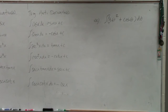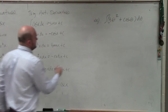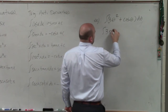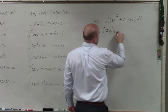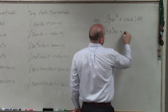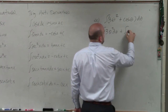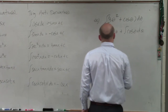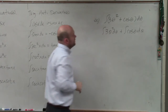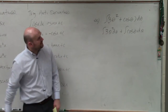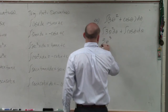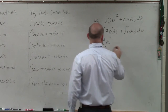Basically, what we can do is break this up: integrate 3θ² dθ plus integral of cosine θ dθ. We know that integrating 3θ², this is going to be 3θ³ divided by 3.